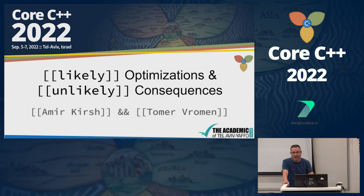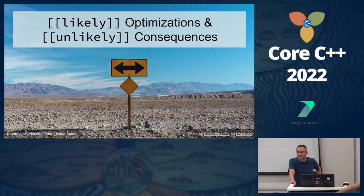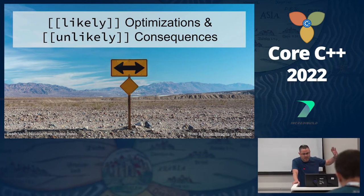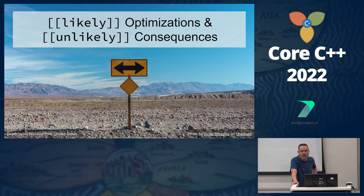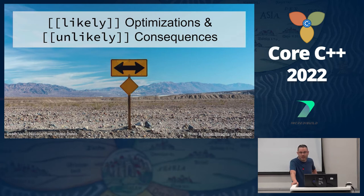We are going to talk about likely and unlikely. This talk started about a year ago when I was giving a talk in our Chorus C++ meetup group. I was playing with likely and unlikely, seeing that it actually in some cases affects the assembly, but doesn't affect so much the actual performance. Then Tomer said he was playing with it while I was speaking and found examples where it does affect performance. And then we worked on this idea for a year, researching in order to come here and talk about this subject.